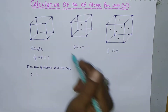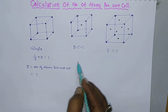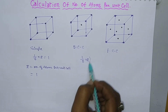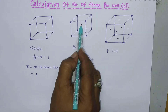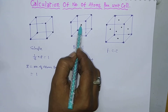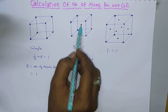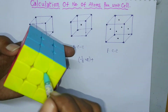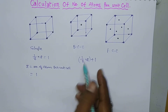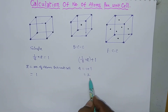For the body-centered cubic (BCC) structure, there are 8 lattice points at 8 corners, contributing 1/8 × 8 = 1. In addition, there is a lattice point at the center of the body, which belongs to this cube only and is not shared with any other cube, so its contribution is 1. Therefore Z = 1 + 1 = 2 for BCC.